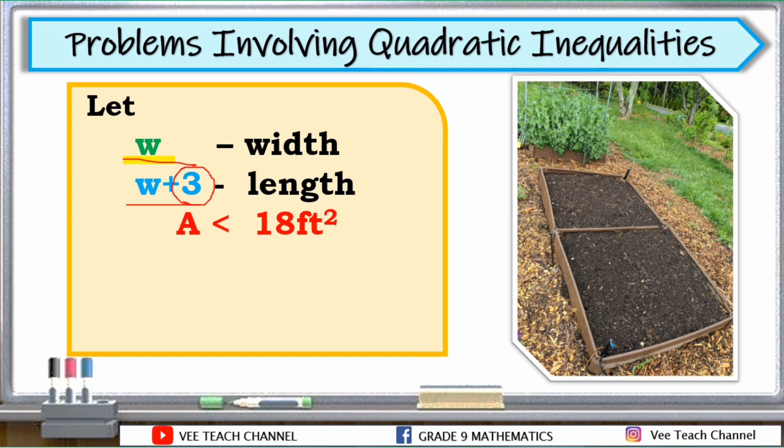Now that we all have the given, let us now recall the formula in finding the area of the rectangle. In finding the area of a rectangle, we have length times width. And using this formula, let's substitute the width and length. Length is W plus 3, and we will multiply the length to our width. Our width here is W. And instead of writing equal, we will use less than. According to the problem, the area is less than 18 feet squared. That's why we will use less than 18. And as you can see, this is now a quadratic inequality.